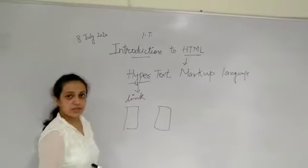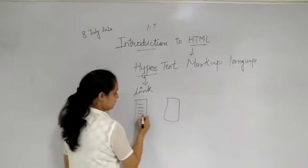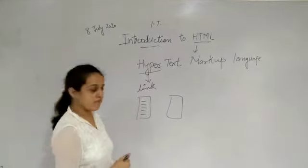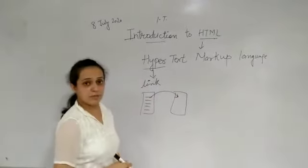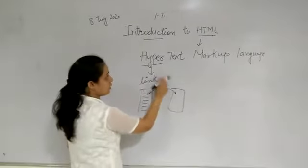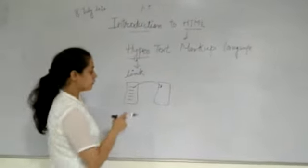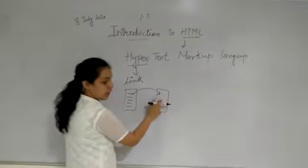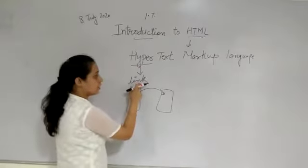We all have seen that when we are searching any information on Google or on the internet, so many links are provided. We click on one link and another page will be opened. This is called your hyper, hyper means link. When we jump from one page to another page, it is called your hyper or link.